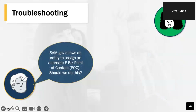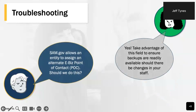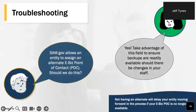SAM.gov provides an option to enter both the eBiz point of contact and an alternate eBiz point of contact. SAM allows entities to identify an alternate, but we find it can be left blank or sometimes entities list the same person twice. We strongly encourage you to take advantage of this field to ensure that backups are readily available in case of any changes in your staff.